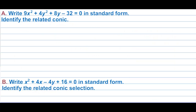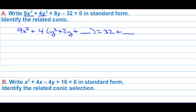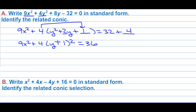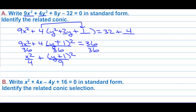Write that equation in standard form and identify the related conic. We have an x squared and a y squared, so: 9x squared plus 4(y squared plus 2y) plus something equals 32 plus something. Completing the square: 2 divided by 2 is 1, 1 squared is 1, so we add 1 inside the parentheses, adding 4 to the equation side. We get 9x squared plus 4(y plus 1) squared equals 36. Dividing by 36: x squared over 4 plus (y plus 1) squared over 9 equals 1.